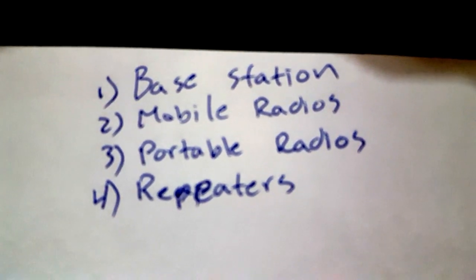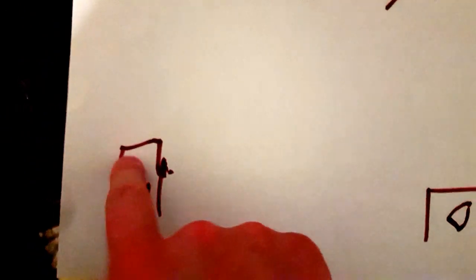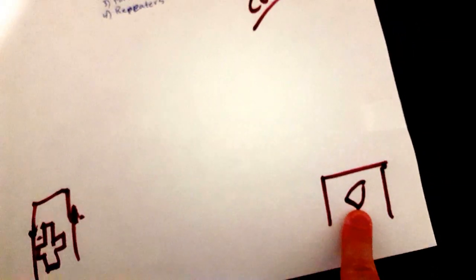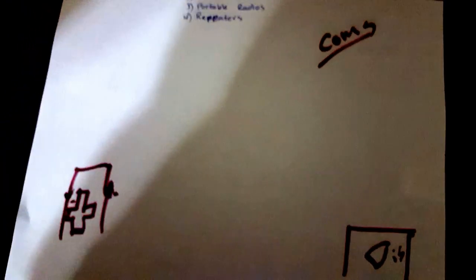I'm gonna start off with base stations. Base stations—these are your hospitals. So that's a hospital right there with a cross. Obviously that's supposed to be a D for dispatch, where you get dispatched from. All depending on who you work for, it'll be different.